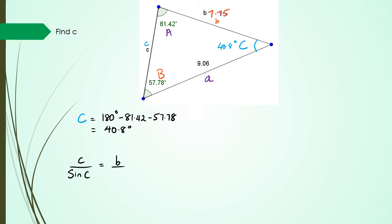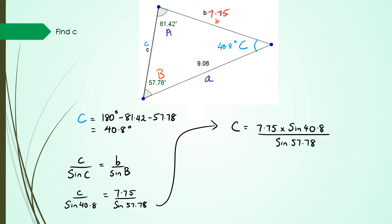So I've got C over sine B. Okay and so now I have C over sine 40.8, B is 7.75 divided by sine 57.78. And this could be written as little C equals 7.75 times sine 40.8 divided by sine 57.78.